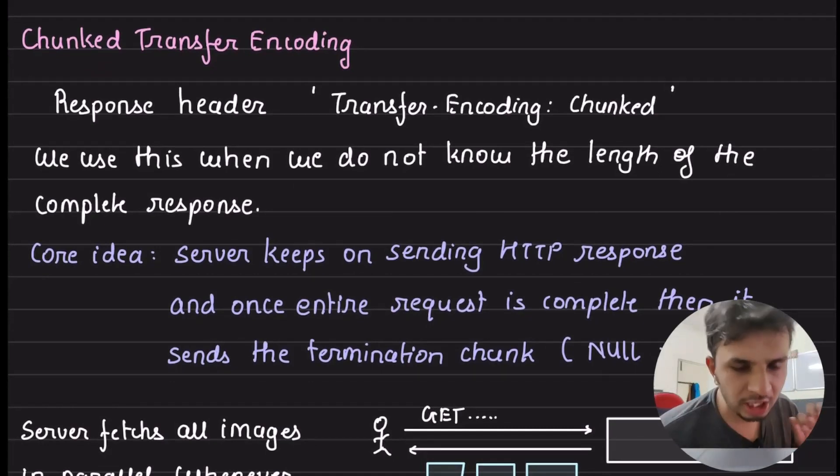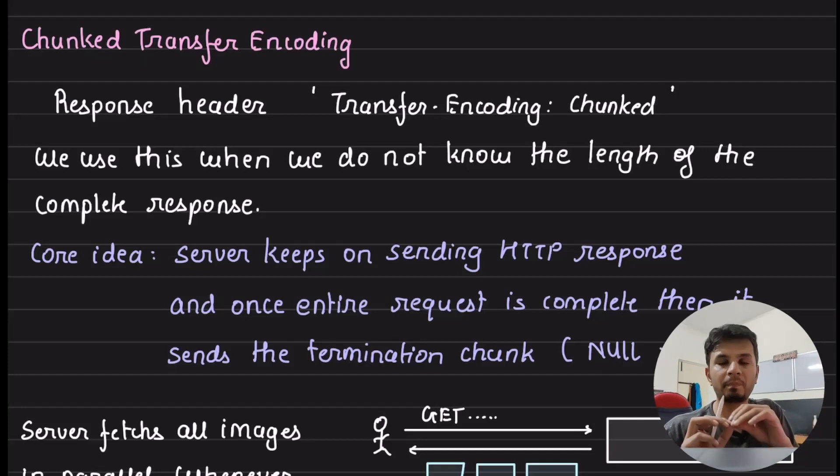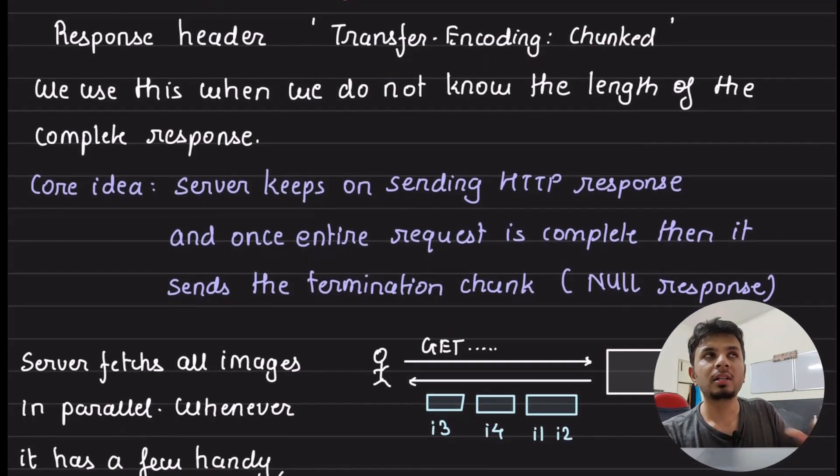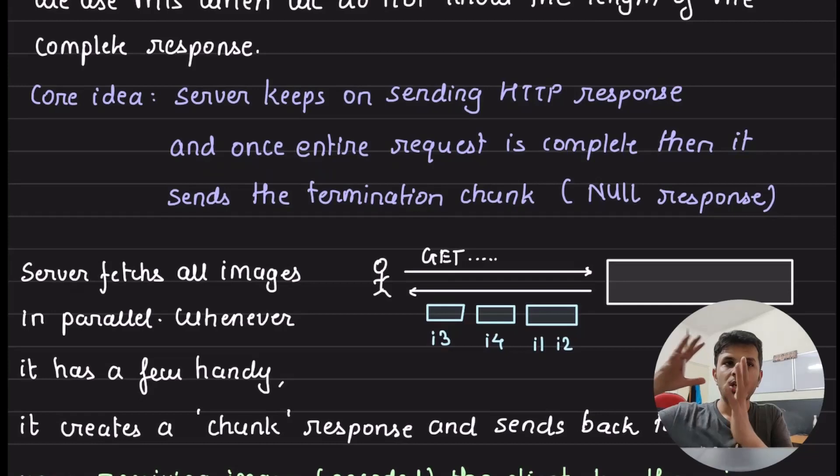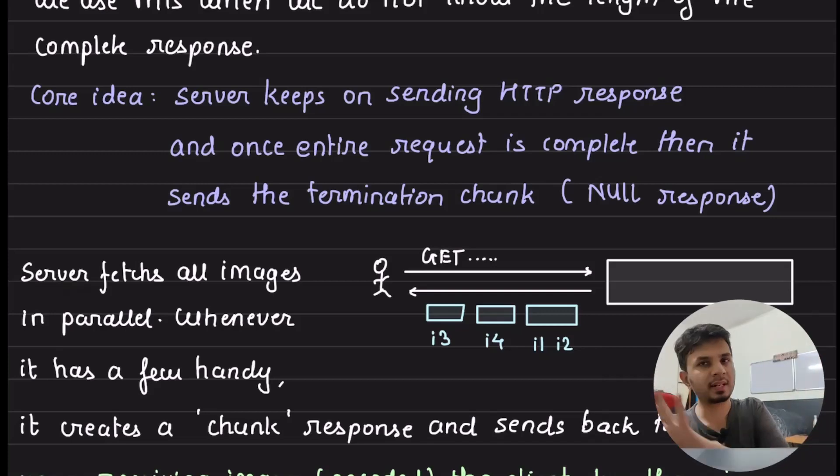Transfer chunked encoding. If you are using HTTP 1.1, this is a massive, massive feature when you are transferring large files. To have your client understand that you would be sending response in chunks, you have to pass this response header called transfer-encoding chunk. What typically happens is, you send a request, server computes the response, server sends the response. While sending the response, the server knows how many bytes it has to send.